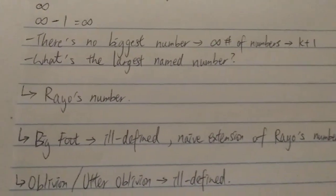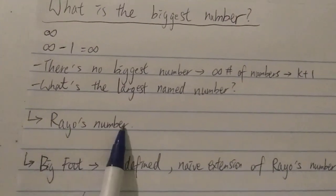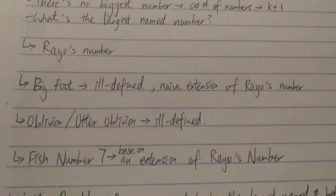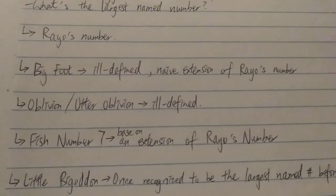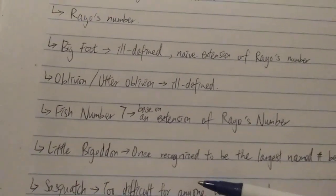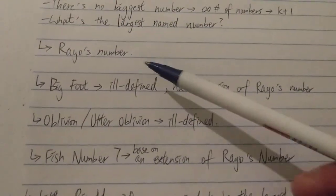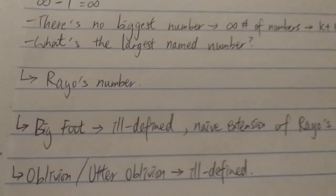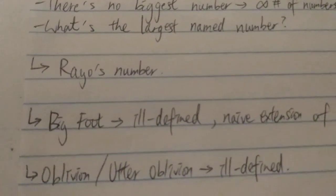So there we have it. This is kind of a quick list of the biggest numbers that are maybe bigger than Rayo's number. A lot of people still believe Rayo's number is the biggest named number because it's not actually ill-defined. And a lot of numbers here are actually kind of based on Rayo's number. So I think Rayo's number still has its fame.